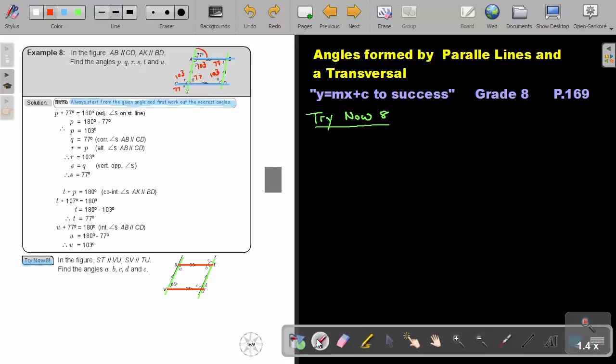Okay. Now, where is the given angle? Can you all see? This is this 65. So if I start with this, if I want to get A, let's first do A.